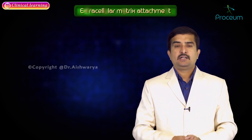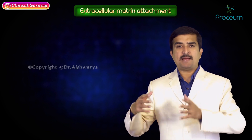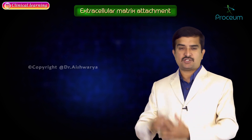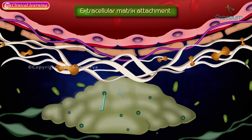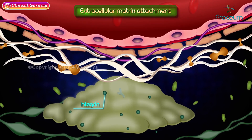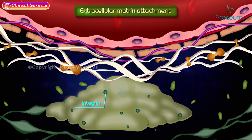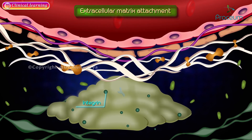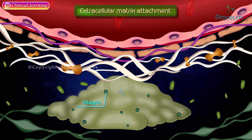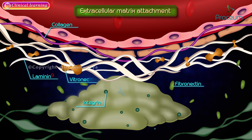Integrins present in tumor cells attach to extracellular matrix components such as laminin, collagen, fibronectin, and vitronectin, and all these are responsible for ECM attachment.